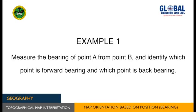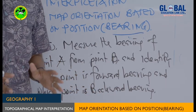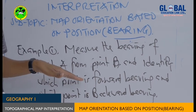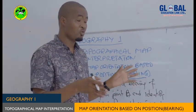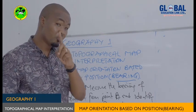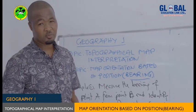Let's see a simple example. Measure the bearing of point A from point B and identify which point is forward and which point is backward bearing. The first procedure is to identify where is point A and where is point B on the map — you can use a place name or a grid reference point. Let's assume point A is here and point B is over here on the map.